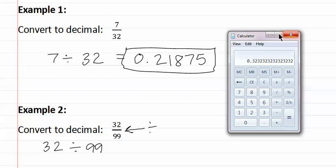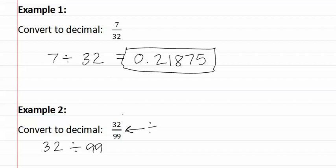This means it is repeating. Remember with a repeating decimal, we use a bar, which means we would write 0.32 repeated.